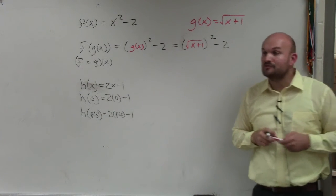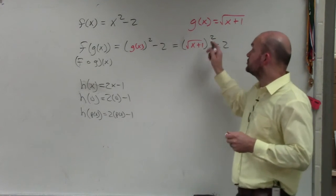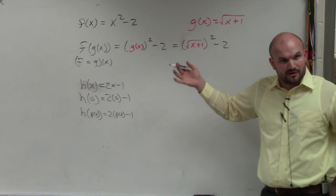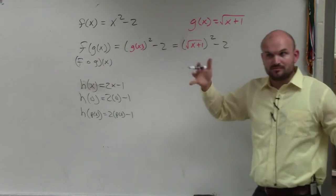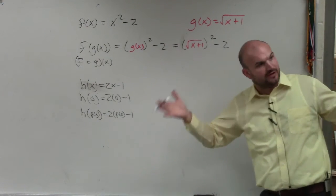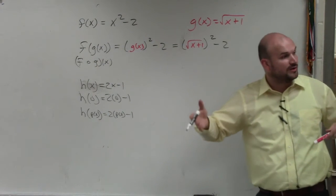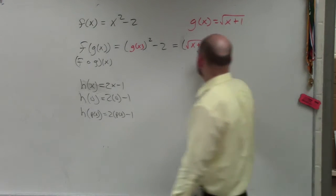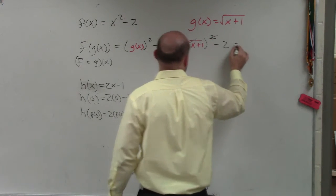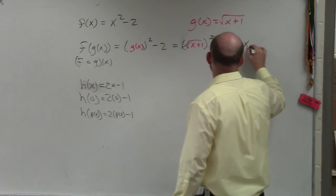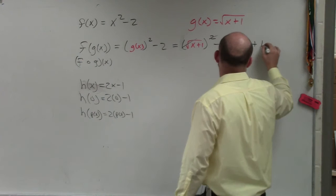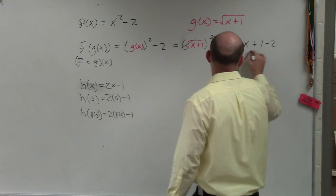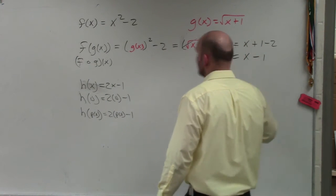Now we just need to remember inverse operations: the square root of something squared — those are inverse operations, right? Just like if you add 1 and subtract 1, those are inverse operations. If you square and take the square root, those are inverse operations. So those undo each other, and we're left with x plus 1 minus 2, which is just going to equal x minus 1.